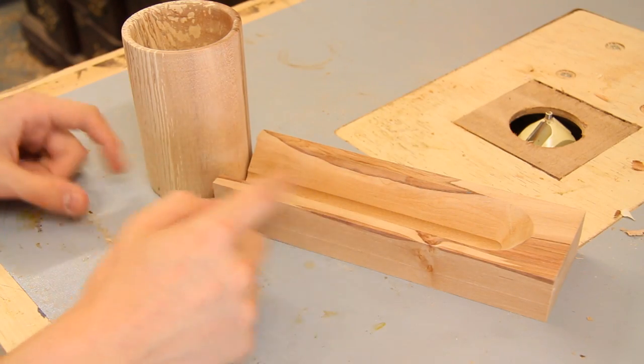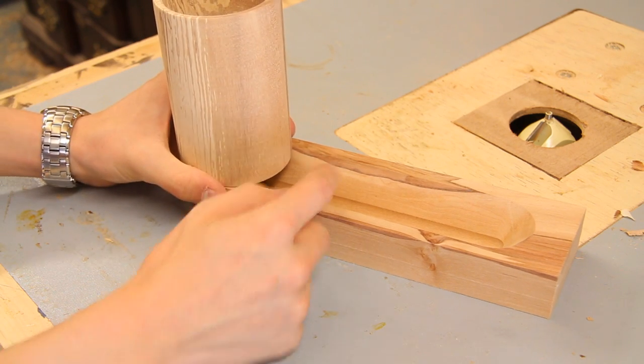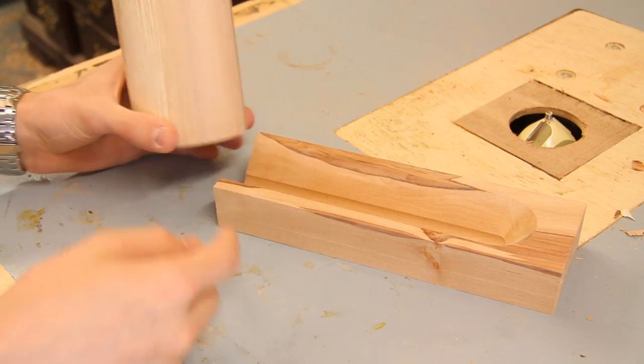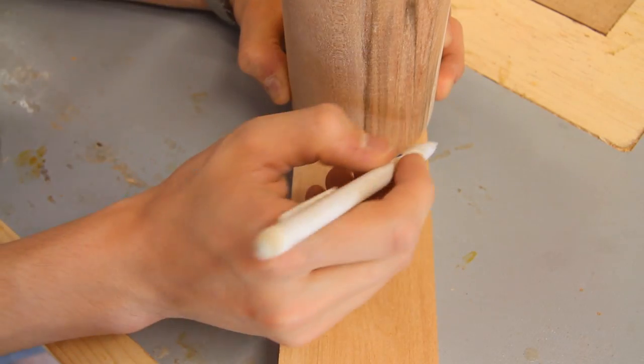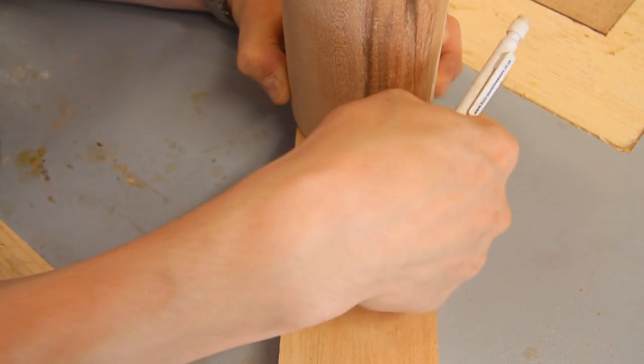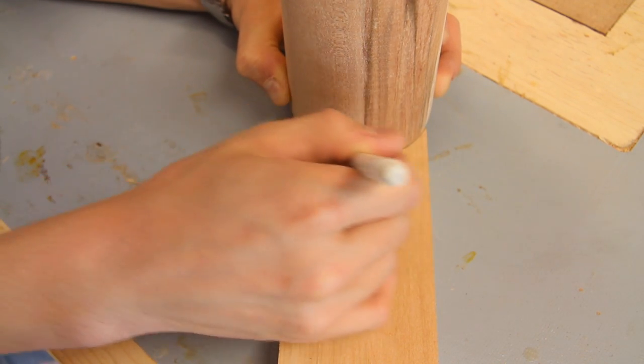So now that I've made the two parts of this desk tidy I want to join them together. And so what I'm actually going to do is to make a cut out into the tray to accept the cup. Using the bottom of the cup I can line up the two edges and mark round that with a pencil.